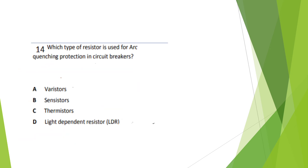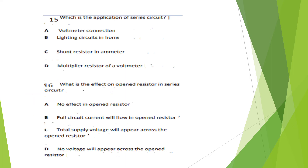Question 14: Which type of resistor is used for arc quenching protection in circuit breakers? The answer is Option D.